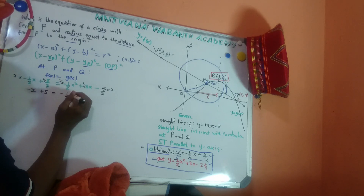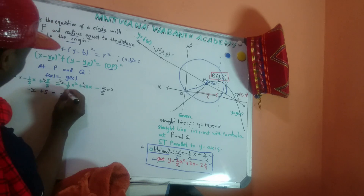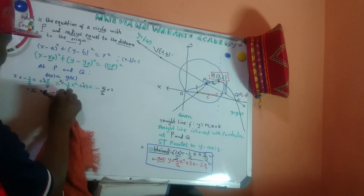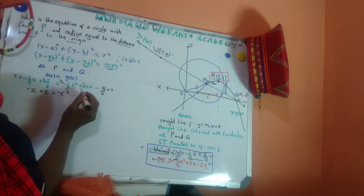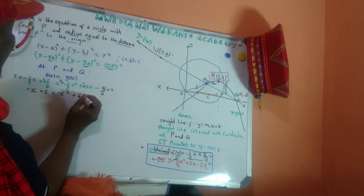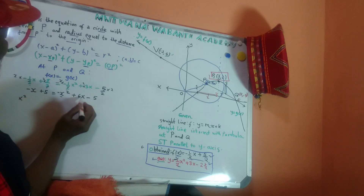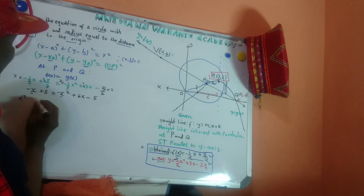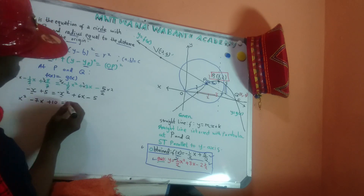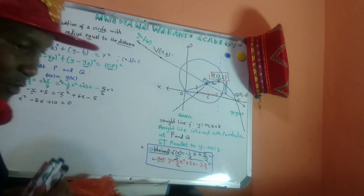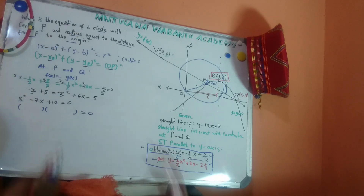After multiplying by two, I'm left with negative x plus 5 equals negative x squared plus 6x minus 5. Taking everything to the left side: negative x squared becomes x squared, and 6x comes over as negative 6x, and negative 5 becomes plus 5, giving plus 5 plus 5 equals 10. So we have x squared minus 7x plus 10 equals zero.